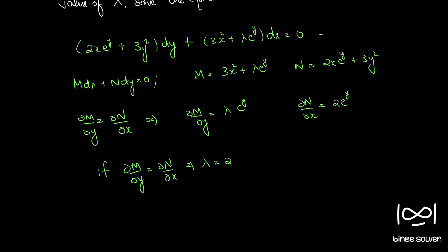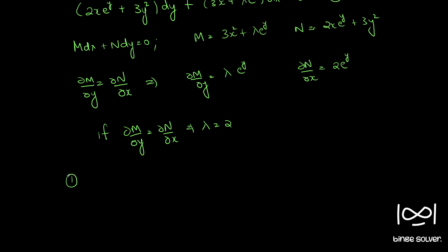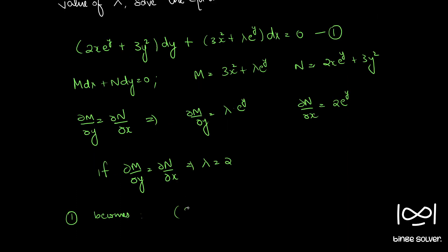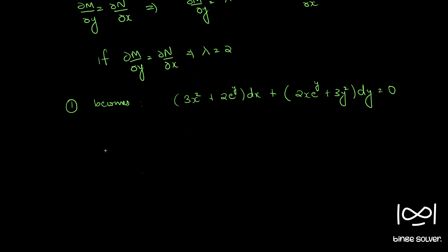Therefore, substituting lambda = 2, the equation becomes (3x² + 2e^y) dx + (2xe^y + 3y²) dy = 0, where this is M and this is N.